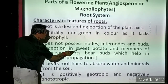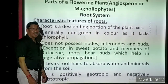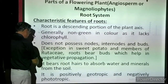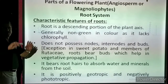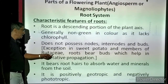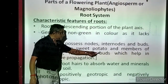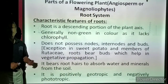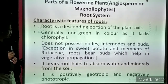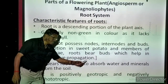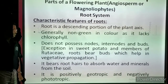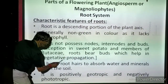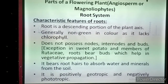One exception is sweet potato. In the Rutaceae family, roots bear buds which help in vegetative propagation. Vegetative parts are root, stem, and leaf together, and propagation means reproduction — so the buds present in the roots of these plants are useful for reproduction.